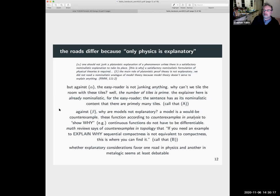So why do the two roads differ? Well, here's what Hartree says: only physics is explanatory. So here's a, I'll break this into two points. Point Alpha, one should not junk a platenistic explanation of a phenomenon unless there's a satisfactory formation in place. This is why a satisfactory nominalistic formulation of physical theories is required.